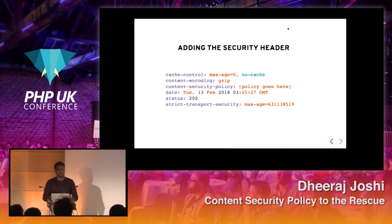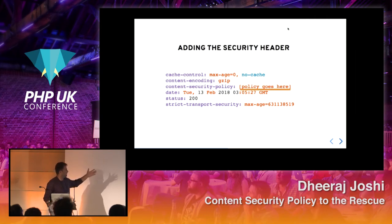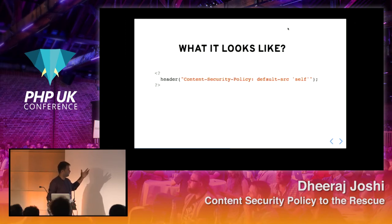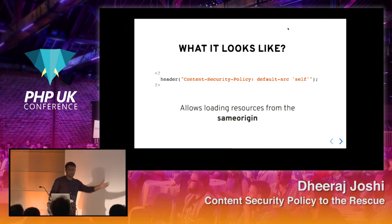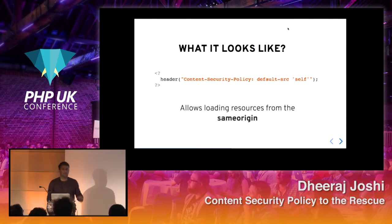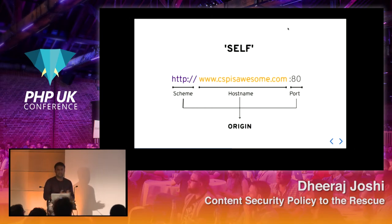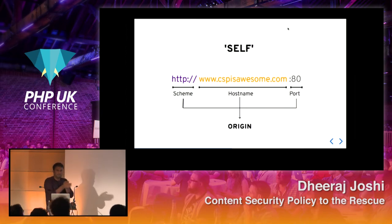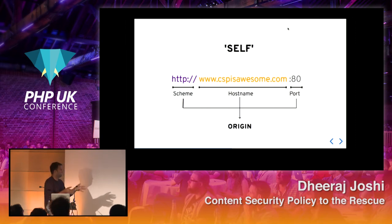How do we add this security header? It's a response header where you define the policy. A simple setup has default-src set to 'self,' meaning it allows loading resources from the same origin. Same origin means the schema, hostname, and port must all match — if any of these components differ, it's not the same origin, and the browser won't share resources like cookies and local storage.